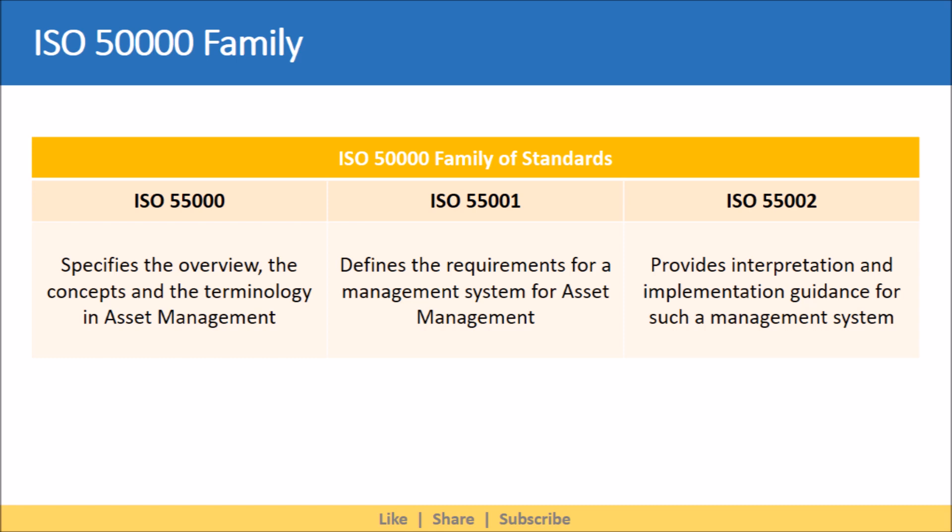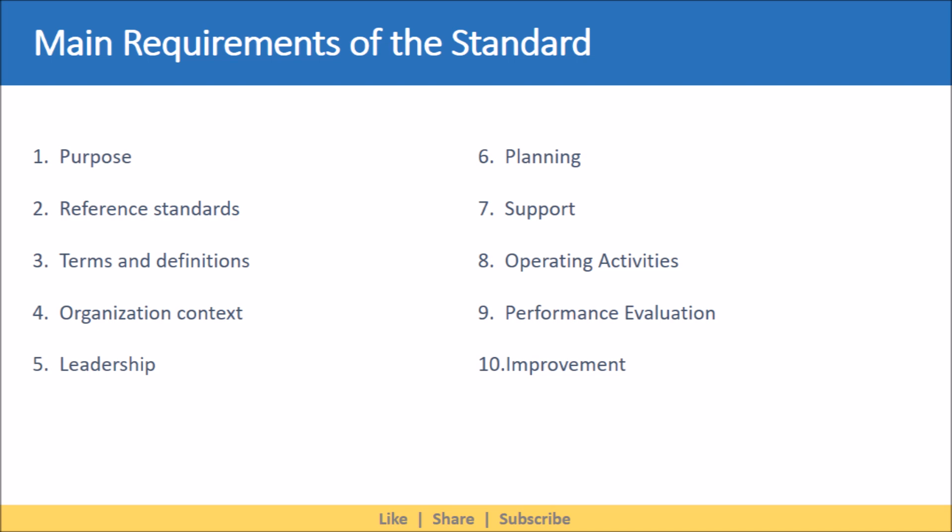Let's understand the main requirements of the standard. ISO 55001:2014 adopts the ISO high-level structure in 10 chapters: 1. Purpose, 2. Reference Standards, 3. Terms and Definitions, 4. Organization Context, 5. Leadership, 6. Planning, 7. Support, 8. Operating Activities, 9. Performance Evaluation, and 10. Improvement.